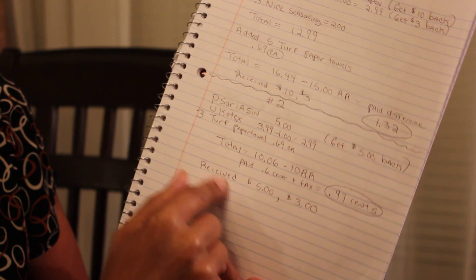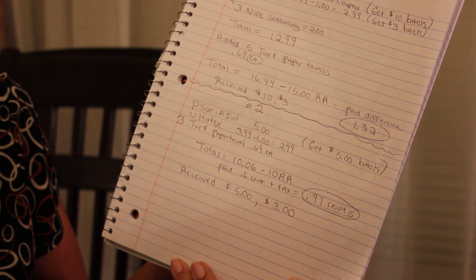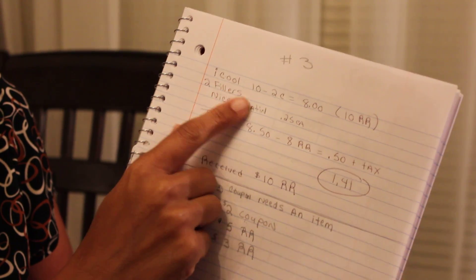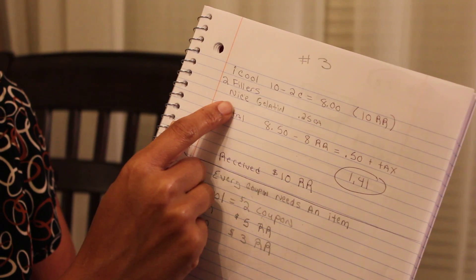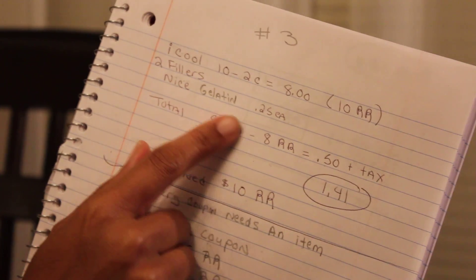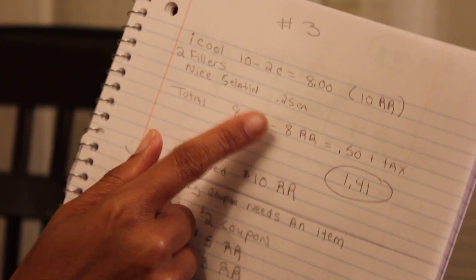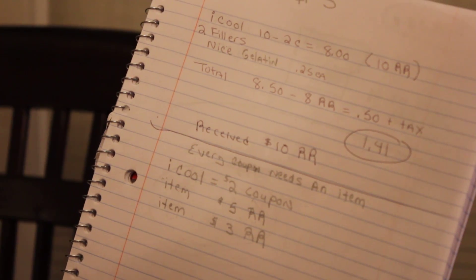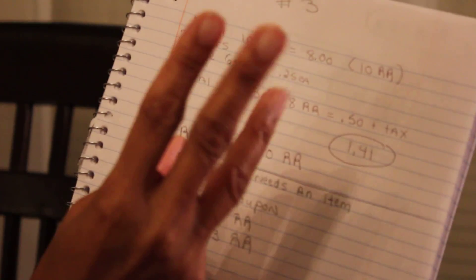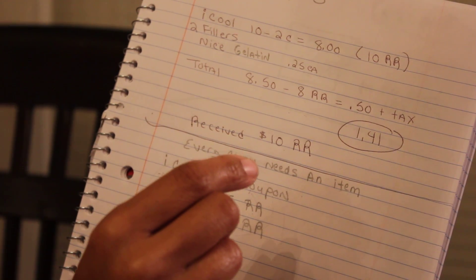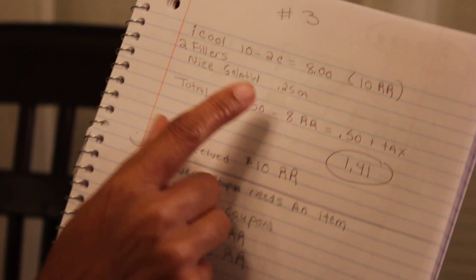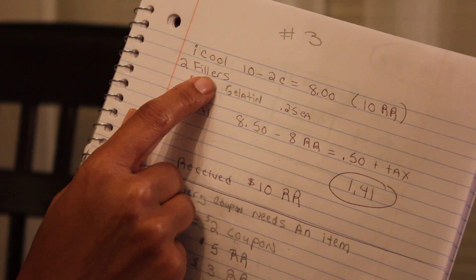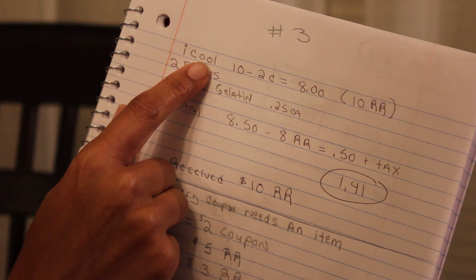Okay, I did one last transaction. I got another iKool and did the same thing. I added two fillers, the gelatin, that was 25 cents each. The reason why I did the fillers is because I had several register rewards. I had the $5, I had the $3, and I had a coupon, so that's three. I need basically a coupon if I have three coupons, I need three items.